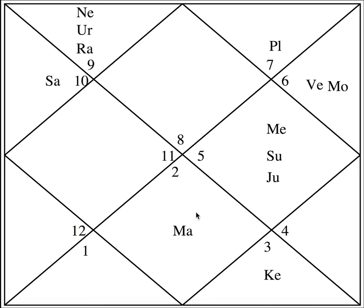Mars is in the seventh house — the lagna lord, the lord of the ascendant itself, is in the seventh house. We can conclude that this person has some challenging karma in relation to relationships, because a fiery planet in the seventh house is not considered good.